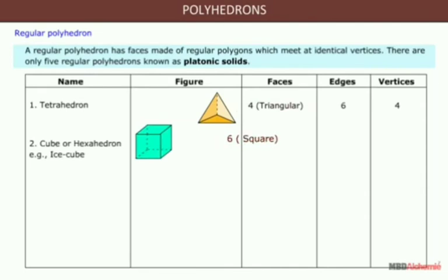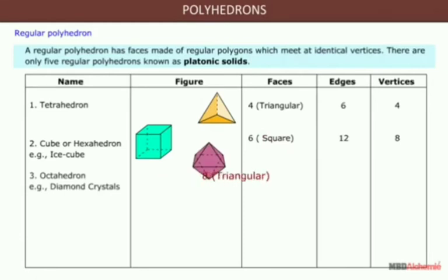The cube has six faces, twelve edges, and eight vertices. The octahedron has eight faces, twelve edges, and six vertices.